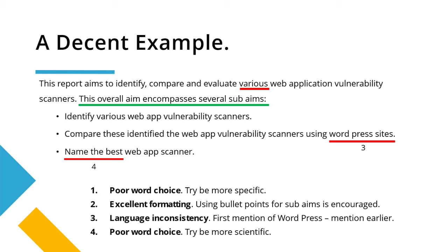Now we have a decent example. There's much more going on here, but there's still quite a bit that could use some work. Similar to the last point, the word 'various' isn't specific enough — what do you mean by various? Is it open source? Is it WordPress? You don't have to tell us how many; just say what you're going to look at, and somewhere in the methodology you'll tell us which ones specifically. What this person has done brilliantly is split up their aims using bullet points. They have one overall aim — 'this report aims to identify, compare, and evaluate various web application vulnerability scanners' — and we can see three verbs: identify, compare, and evaluate. That overall aim is then broken up into three bullet points covering each of those three verbs.